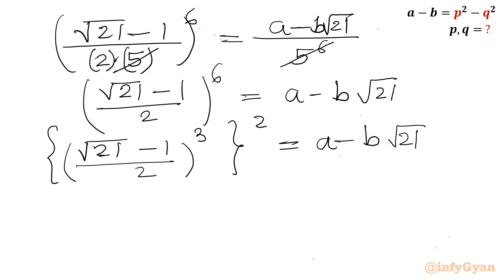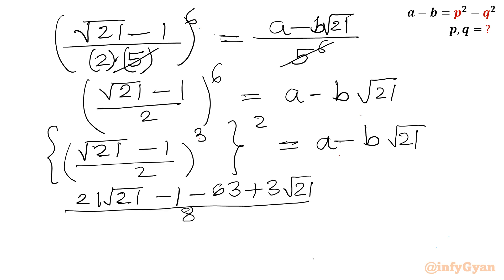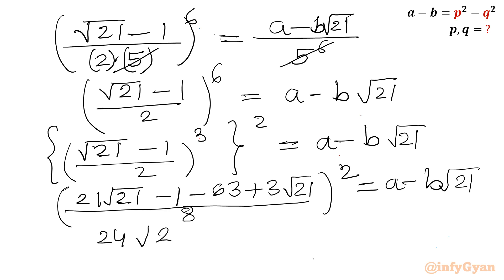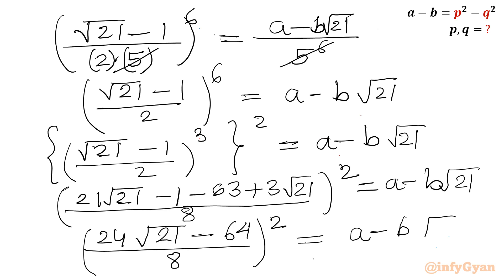I will calculate the cube first and then square. So square root 21 minus 1, whole cubed, using the identity a³ - b³ = a³ - b³ - 3a²b + 3ab²: we get 21 times root 21 minus 1 minus 3 times 21 plus 3 times root 21, divided by 8. This gives 21 root 21 minus 1 minus 63 plus 3 root 21 divided by 8, which simplifies to 24 root 21 minus 64 divided by 8. Since 24 and 64 are both divisible by 8, dividing gives 3 root 21 minus 8.